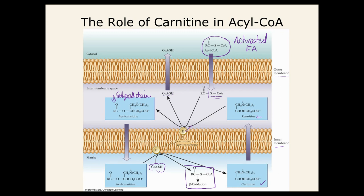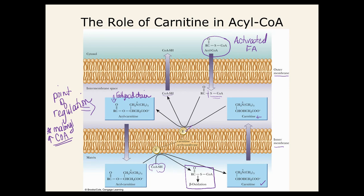This carnitine shuttle is a point of regulation. There's an important molecule called malonyl-CoA — high amounts of malonyl-CoA will shut this process down. If the fatty acid can't get into the mitochondria, it cannot be processed for energy. Once it's in, it will go for energy. There are certain genetic disorders that interfere with carnitine — people can have carnitine deficiencies, and that creates lifelong problems because they can't process fats for energy.